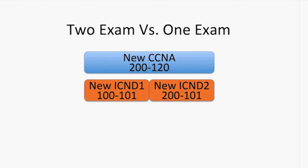If you look at ICND1 versus ICND2 as drawn, they look like the same size orange boxes on the bottom — that's on purpose. If you counted the number of exam topics, there are actually a lot more in ICND1, but some of those are technically prerequisites for what's in the ICND2 exam. So it's roughly a 50-50 breakdown of what's in the ICND1 and ICND2 exam topics.